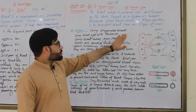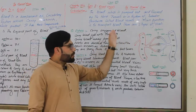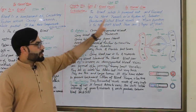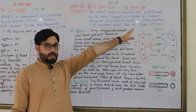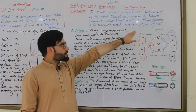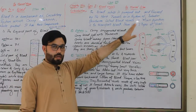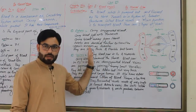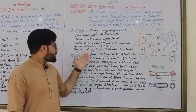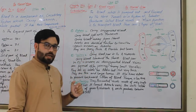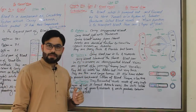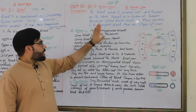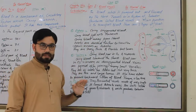The blood vessels are three types: arteries, veins, and capillaries.